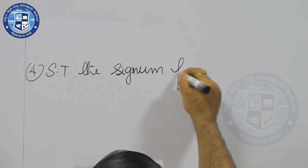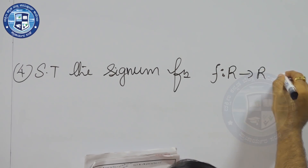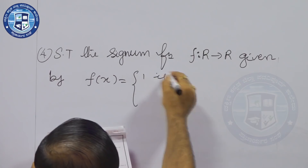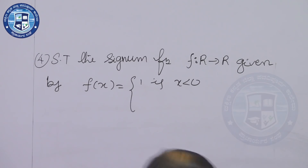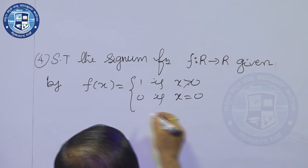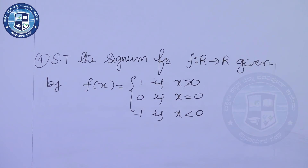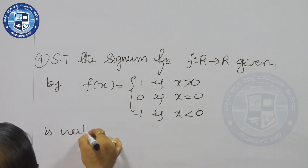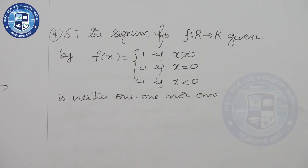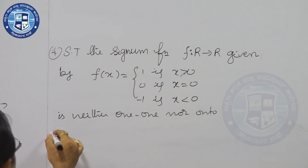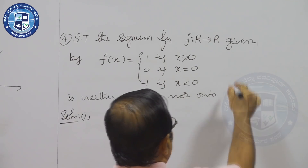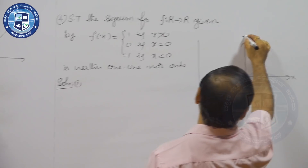The signum function f from R to R is given by f(x) = 1 if x > 0, 0 if x = 0, and -1 if x < 0. This function is neither 1-to-1 nor onto. It is a very simple problem — you can easily verify whether it is 1-to-1 and onto. Let us look at this signum function again.